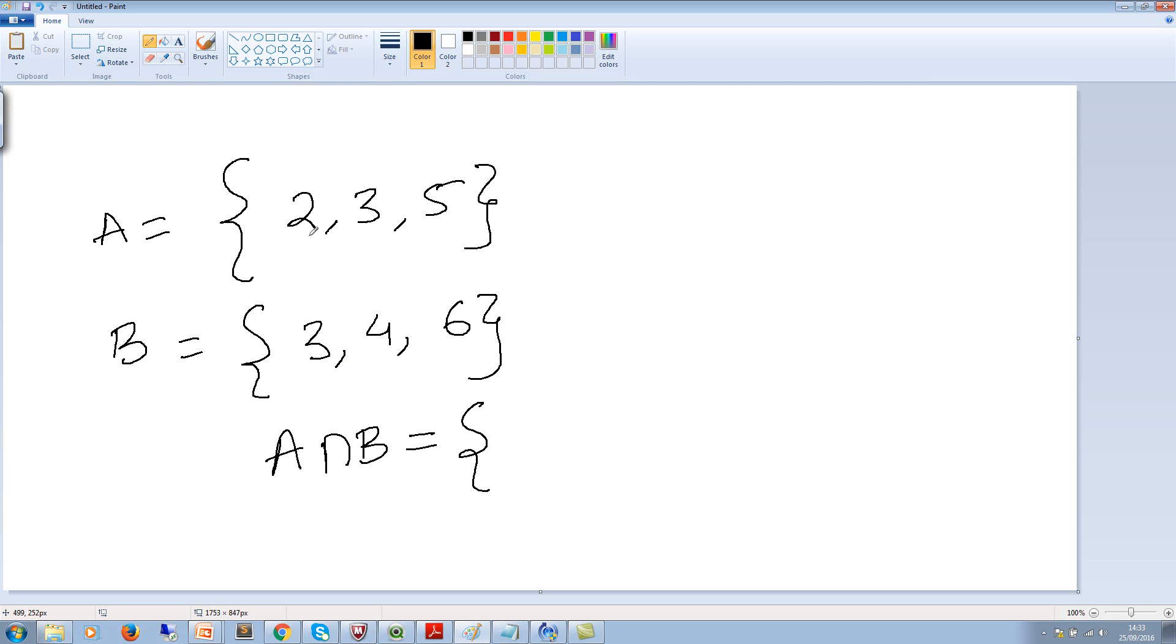Then if you really see this, let me change the color. If you see, the common values are 3, that's it. We don't see any other values which are common in A and B. So that's A intersection B.